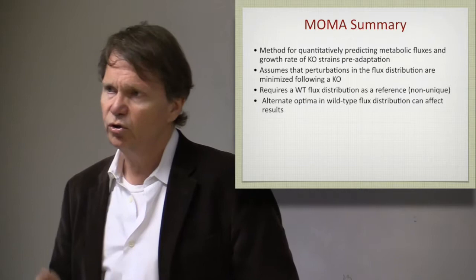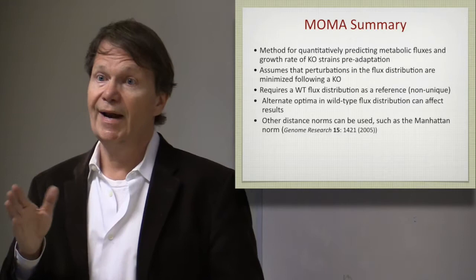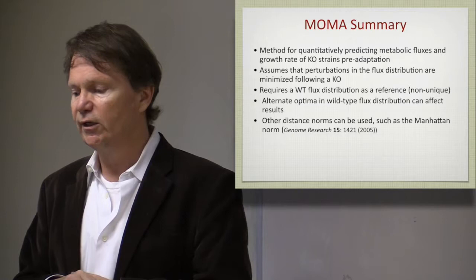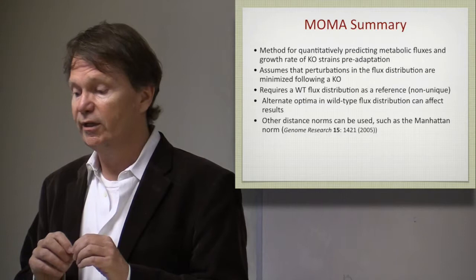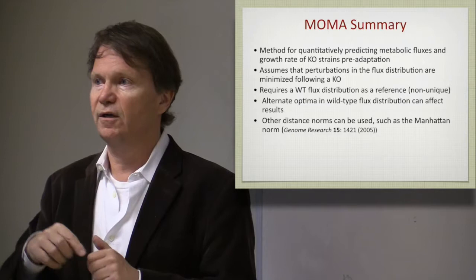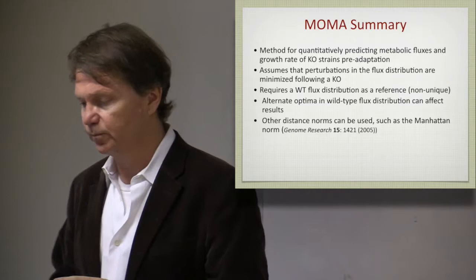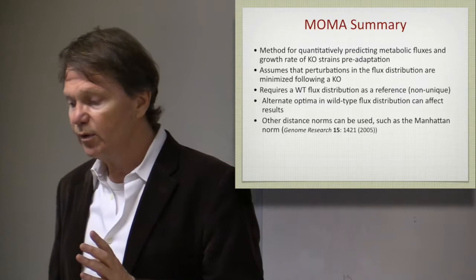Therefore, you know, the alternate optima in the wild type have to be taken into account. People have also used other distance metrics. So this uses the Euclidean distance. If you use just a Manhattan norm, the absolute length of the vector, you actually end up with an LP problem, because that's a linear objective function. People have calculated other things. They've used the Hamming distance, where they kind of calculate the minimum number of fluxes that have to be changed to get to the solution space. So the minimum number of gene expression or regulatory events. That's a method called regulatory on-off minimization, or ROOM. So that's an MILP type procedure. So people have played with different distance metrics to look at this.